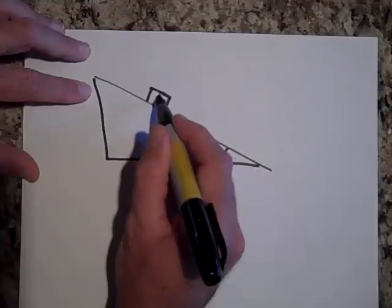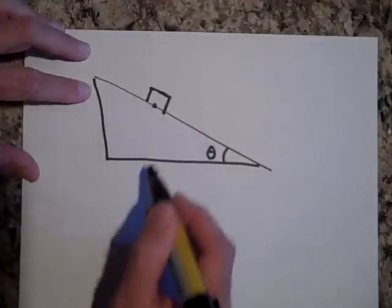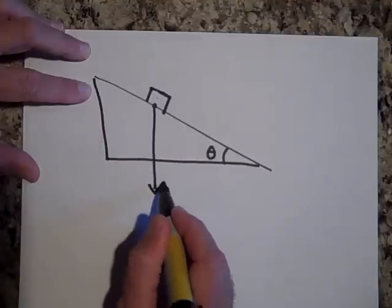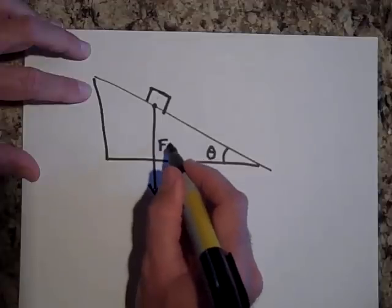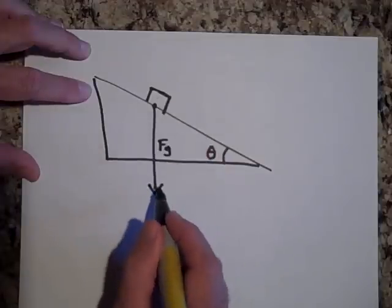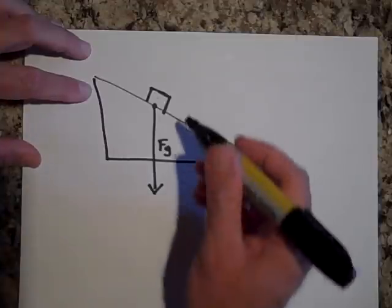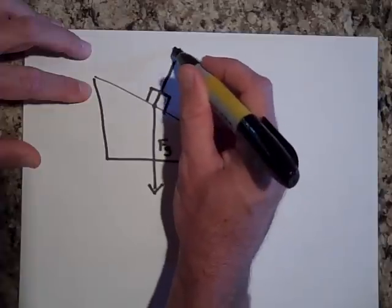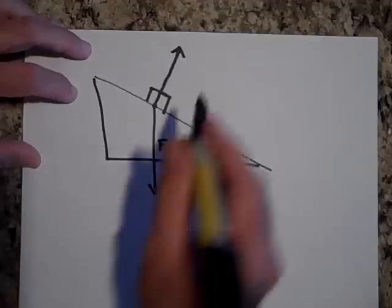For inclined planes, place the dot right on the inclined plane. Draw the gravity force vector large enough that it goes all the way through the inclined plane — you'll see why in a second. Then draw in the normal force, perpendicular to the plane. That's F_N.